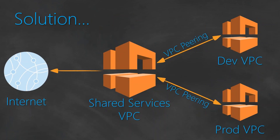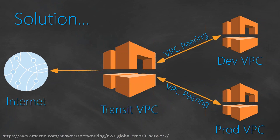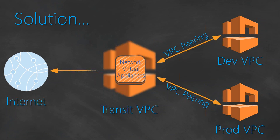Instead of a shared services VPC, we need to build something called a transit VPC. There is a URL on your screen — you can go ahead and see how to build a transit VPC for your use case. Let us take a simple scenario of two VPCs: dev and fraud. We first build the transit VPC, and then we create a network virtual appliance. There are a lot of third-party appliances available in the market, or you can build your own appliance with open source software.